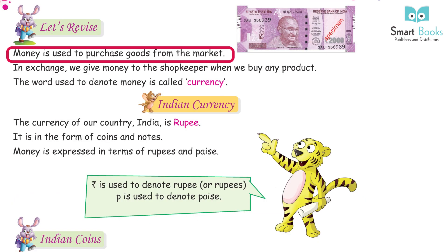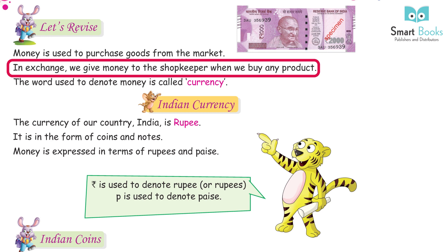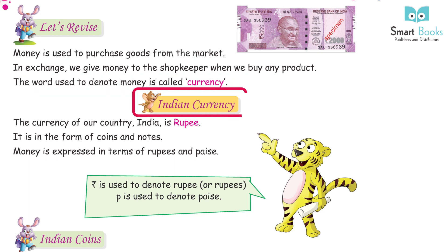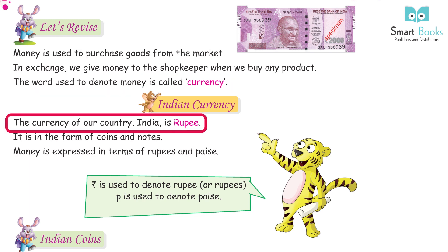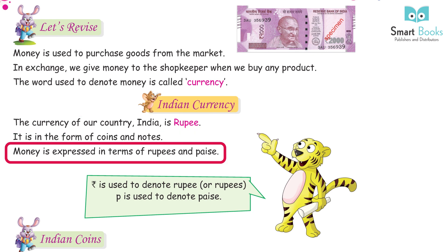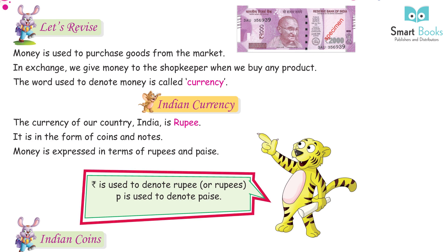Teacher's note: ask the student for what purpose do they use money? Let's revise: money is used to purchase goods from the market. In exchange, we give money to the shopkeeper when we buy any product. The word used to denote money is called currency. The currency of our country India is rupee. It is in the form of coins and notes. Money is expressed in terms of rupees and paise. 'Rs.' is used to denote rupee or rupees, and 'P' is used to denote paise.